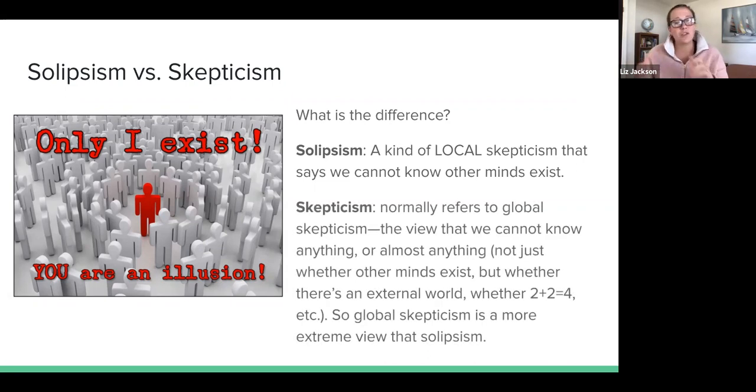Whereas skepticism in general, especially academic skepticism, normally refers to global skepticism. This view that we cannot know anything, or at least we can doubt almost everything. So it's not just about other minds, but about whether there's a table here, whether there's an external world at least as we perceive it, whether two plus two equals four. So global skepticism is more extreme than just solipsism. Most global skeptics would be solipsist. They would say we also can't know that other minds exist, but also they would say that we should doubt a ton of other things as well.